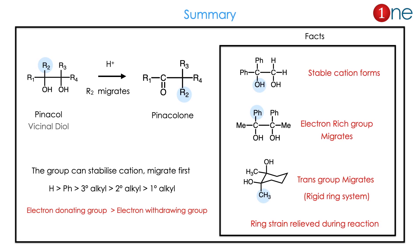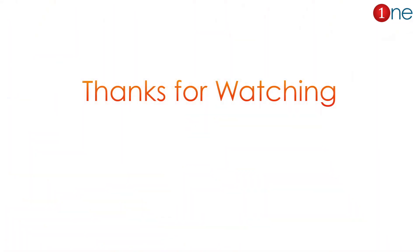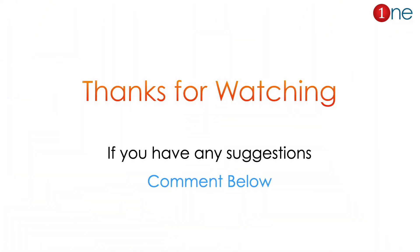Let us summarize what we have seen. Pinacol-pinacolone rearrangement converts a diol into a ketone with migration. Electron-rich groups migrate first; electron-donating groups have higher migrating ability than electron-withdrawing groups. The key facts: stable cation always forms, electron-rich group migrates, trans group migrates in the rigid ring system, and ring strain is always relieved during the reaction. That is all from this video. I hope it was useful. Thanks for watching — if you liked the video, please subscribe and share.